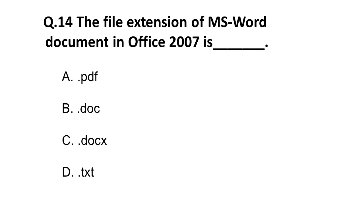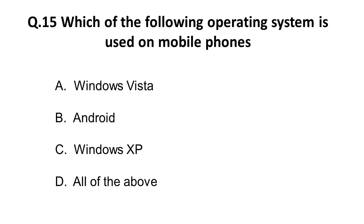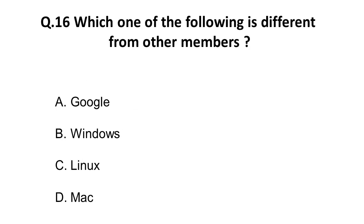The fifteenth question: which of the following operating systems is used on mobile? iOS is used for Apple mobiles but that option is not listed here. In India, apart from Apple, the operating system used on mobiles is Android. Windows XP and Windows Vista are used for laptops. So the correct answer for the operating system on mobile is Android. The sixteenth question asks you to find the odd member: Windows, Linux, Mac are operating systems, whereas Google is a search engine. So the odd member here is Google.